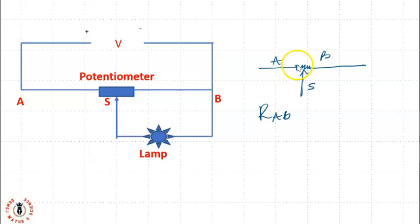If the total resistance of this potentiometer is RAB, that is the total resistance from A to B, it's the same thing as the resistance from A to S plus the resistance from S to B.